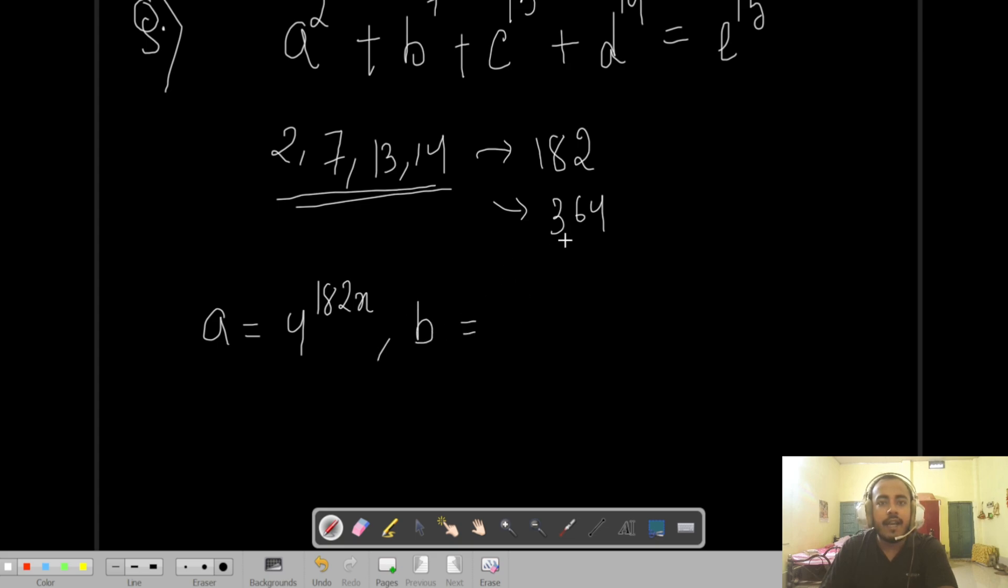Similarly, if I go down here and I want to write b as 4 to the power something, what should I write? I have to write something such that b to the power 7 becomes 4 to the power 364x. So if you divide 364 by 7, this basically gives you 52x, right?